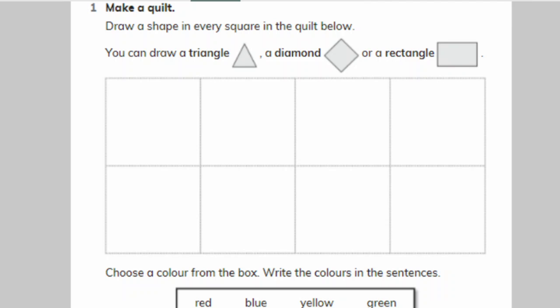Good morning first standard, how are you all today? We're going to make a quilt with shapes. There are eight squares here: 1, 2, 3, 4, 5, 6, 7, 8. You can draw a triangle, diamond, or a rectangle in any of the boxes in any combination and in any color.